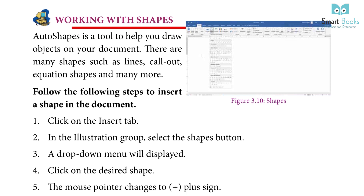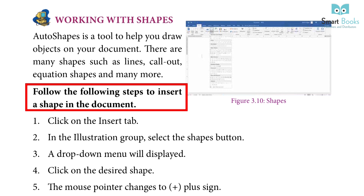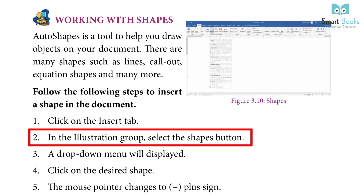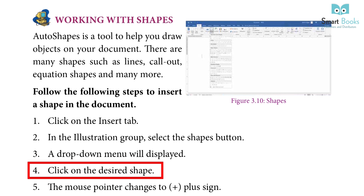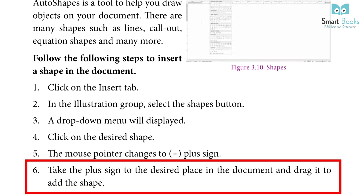Working with Shapes: Auto shapes is a tool to help you draw objects on your document. There are many shapes such as lines, callouts, equation shapes and many more. Steps to insert a shape: 1. Click the insert tab. 2. In the illustration group, select the shapes button. 3. A dropdown menu will display. 4. Click on the desired shape. 5. The mouse pointer changes to a plus sign. 6. Take the plus sign to the desired place in the document and drag it to add the shape.